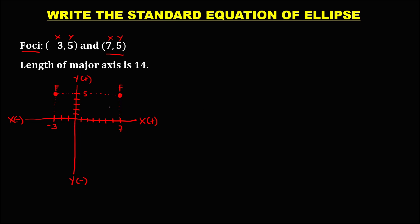Observe that since the position of the foci is in horizontal form, this ellipse is a horizontal ellipse. The standard equation is: (x minus h)² over a squared, plus (y minus k)² over b squared, equals 1.